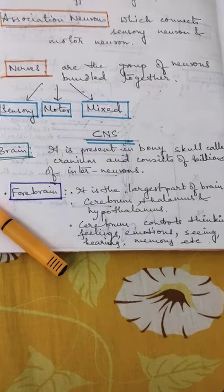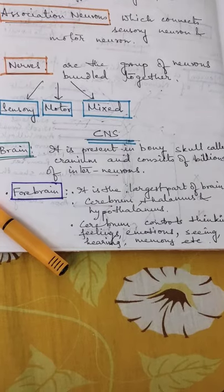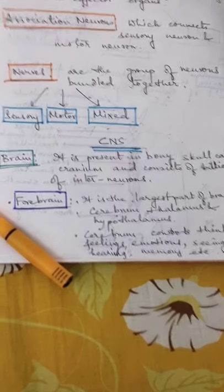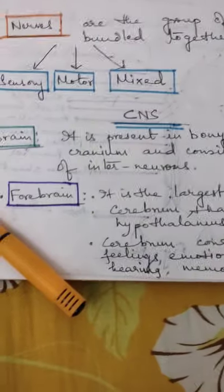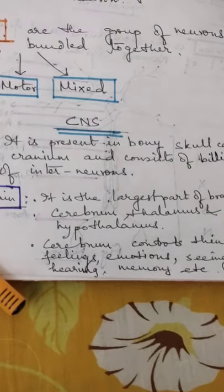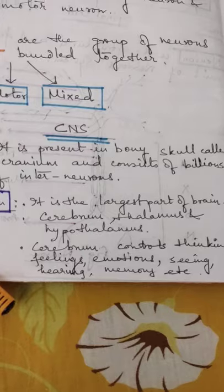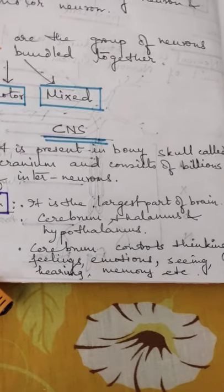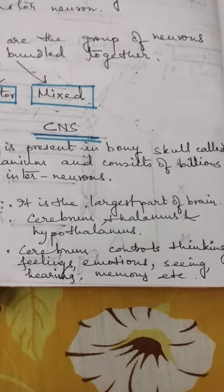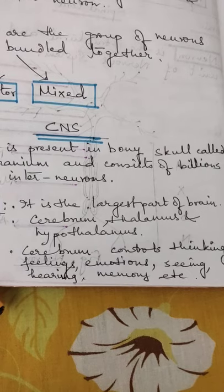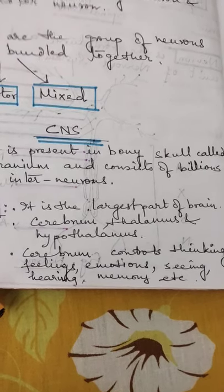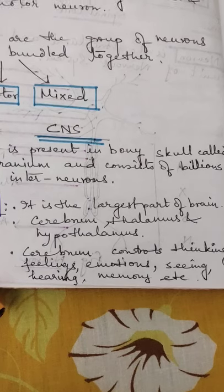Brain has three main parts: forebrain, midbrain, and hindbrain. In the forebrain we find various parts. It is the largest part of the brain and consists of three parts: cerebrum, thalamus, and hypothalamus.